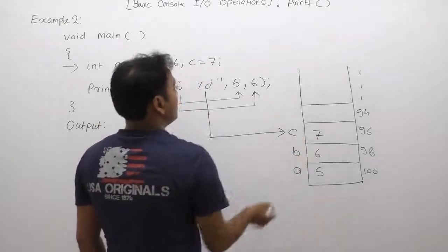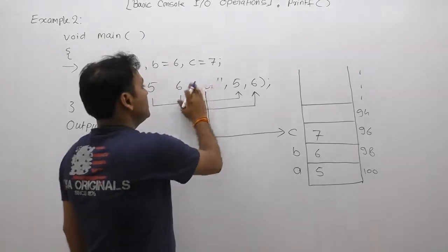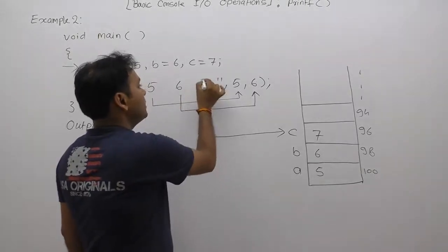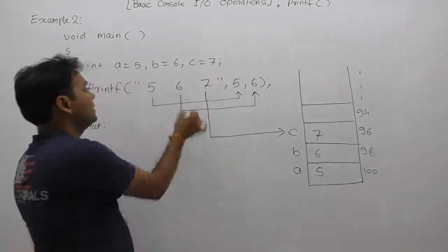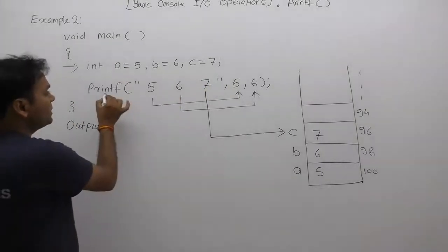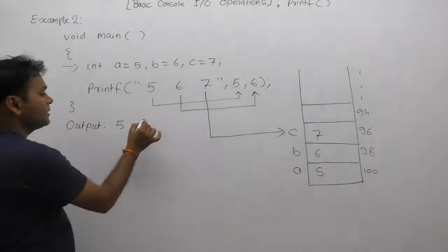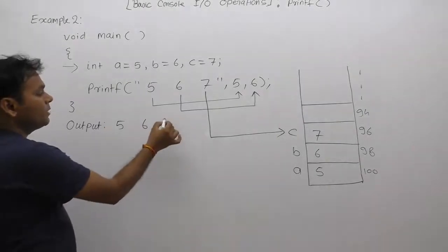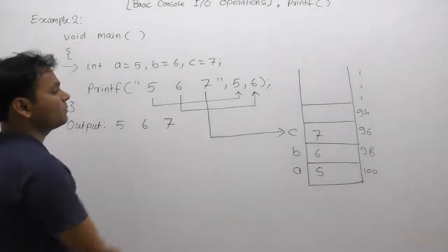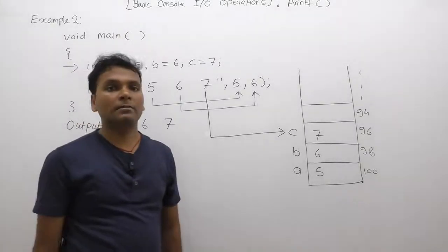The first top element is c with value 7. Therefore in that place we are replacing with the value 7. This is the final value of this printf output, which means this printf prints the output as 5 space 6 space 7. This is the final output of that printf statement.